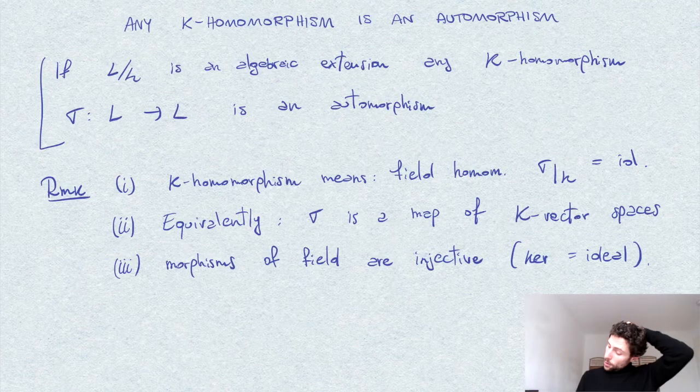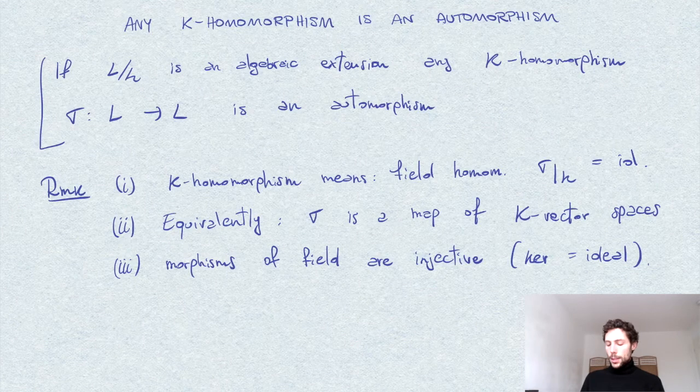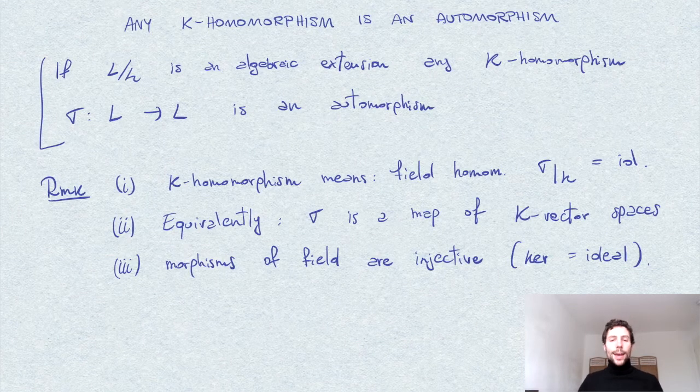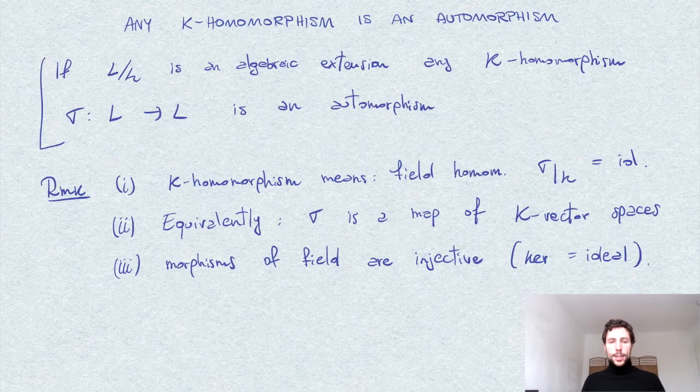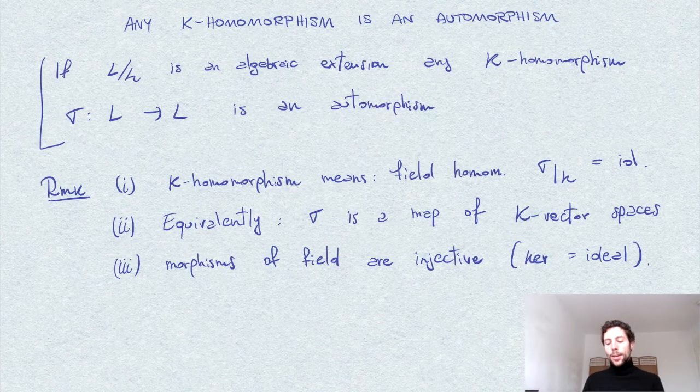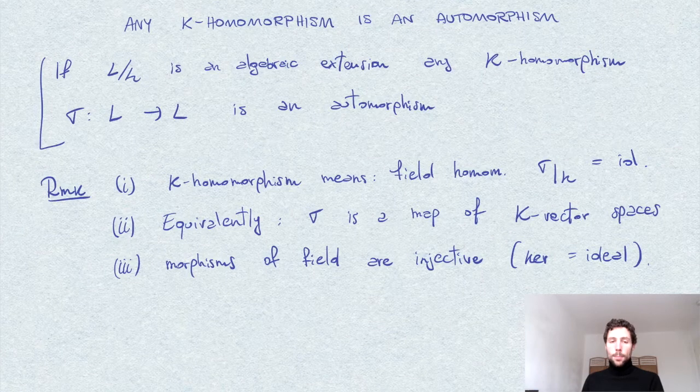So in particular, you see that for sure sigma in our problem is injective. So if we knew that L over k was a finite extension, finite degree, so the dimension of L as a vector space over k is finite, then the statement would be obvious because we have an injective map between two vector spaces of the same dimension.